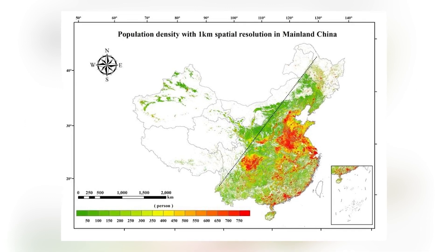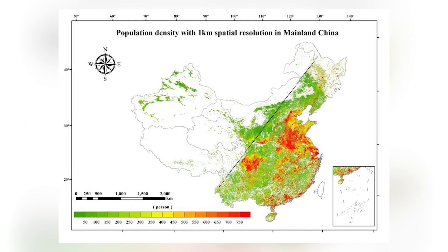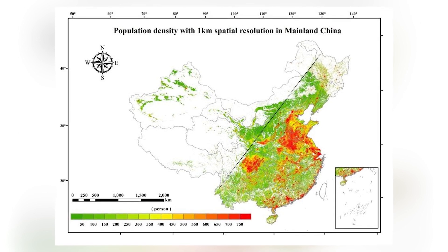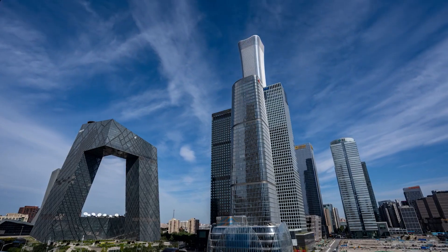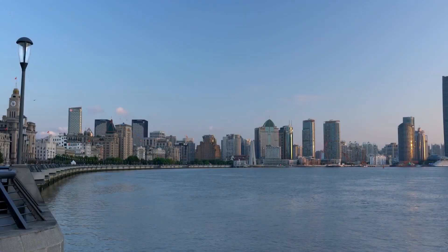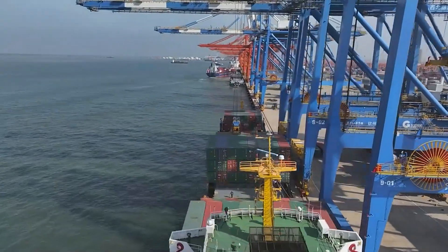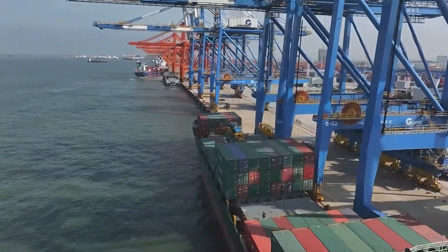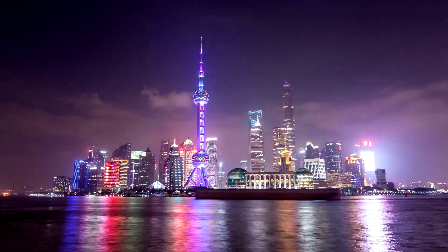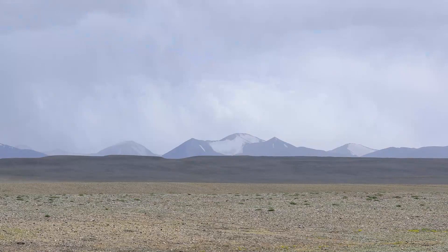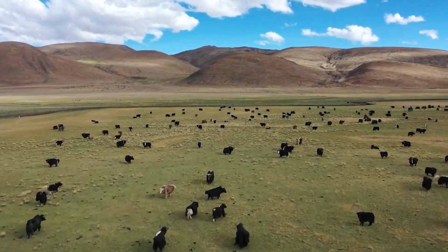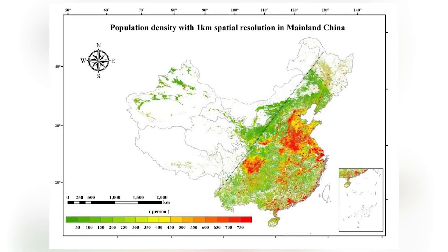This line from the Heihe River in northeast China to Tengchong, Yunnan on the southwest border, divides China into two different parts. One part is the densely populated southeast with fertile plains and hills, abundant precipitation, fast development, and 94% of China's population. On the other side is the sparsely populated land with rugged terrain, deserts, snowy plateaus, harsh climate, and only 6% of the total population. This famous line depicts the imbalance between these two parts of China.